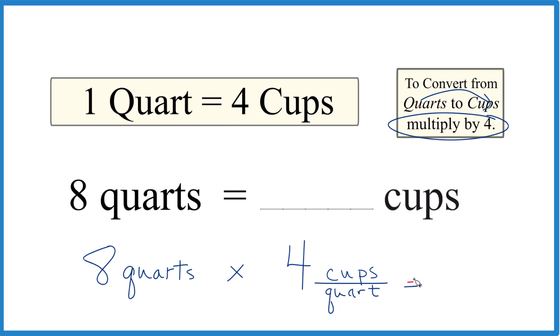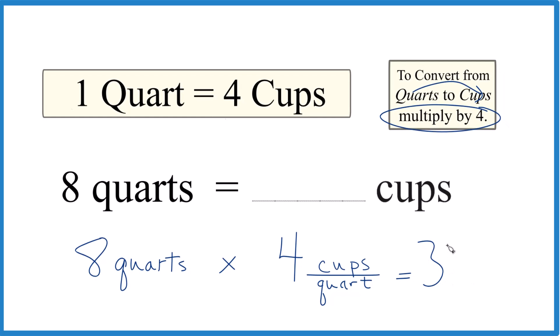So just like before, eight times four, that's 32. But now we have quarts here, top and bottom. They cancel out. That leaves us with cups. So we know we did this correctly.